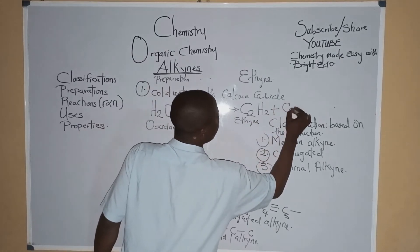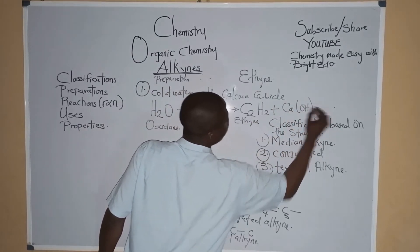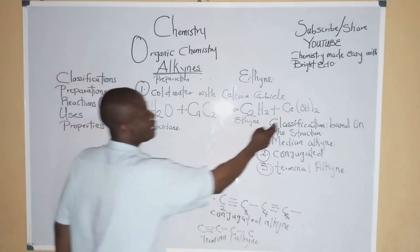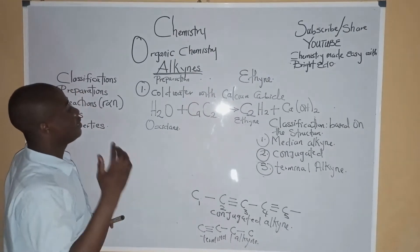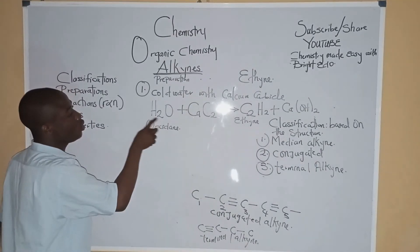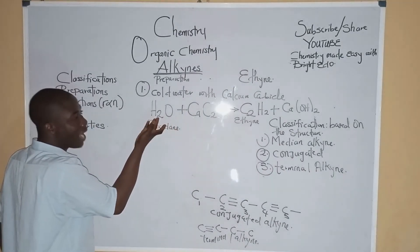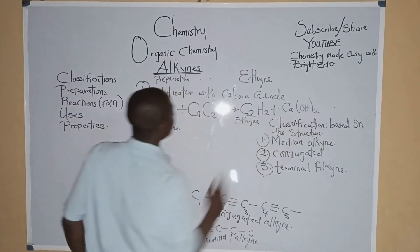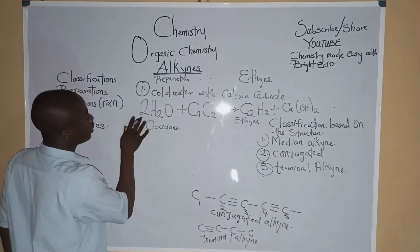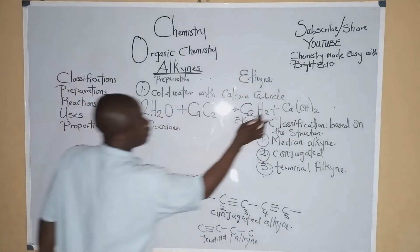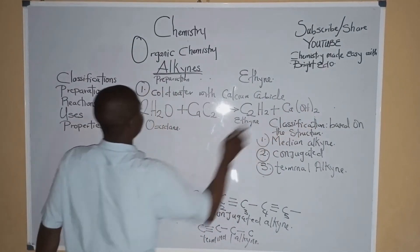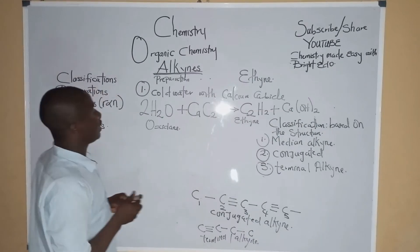Plus calcium hydroxide as a byproduct. Now let's balance the reaction. We have two atoms of hydrogen on one side and four on the other, so we put two in front of water. We have four hydrogens and balanced oxygen. The reaction is now balanced.